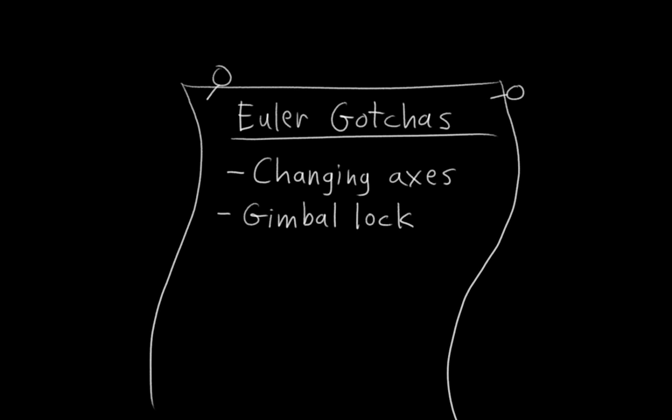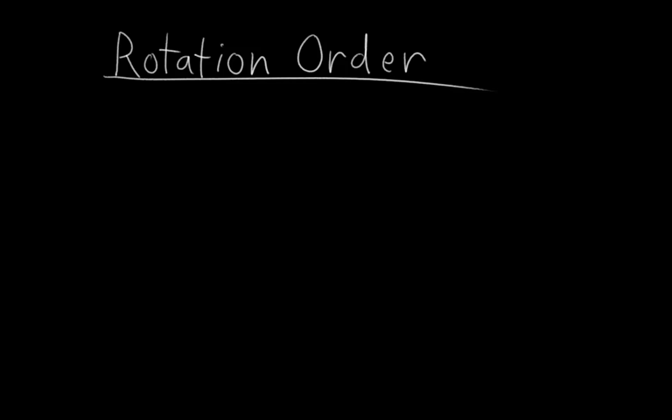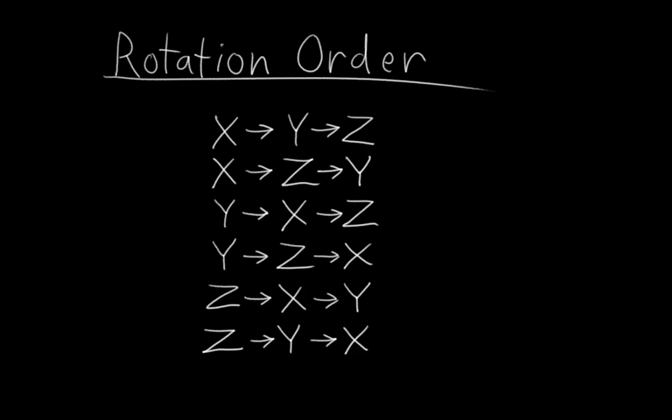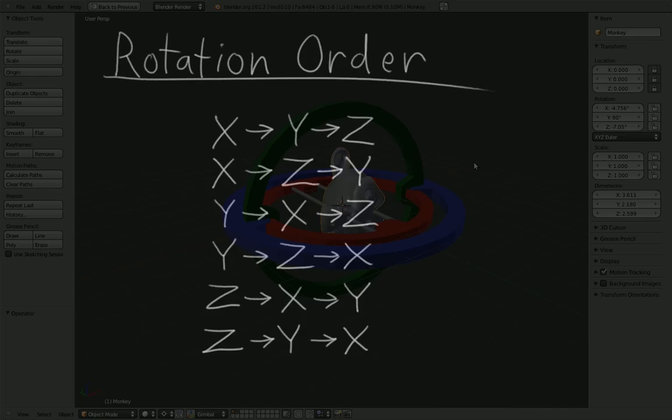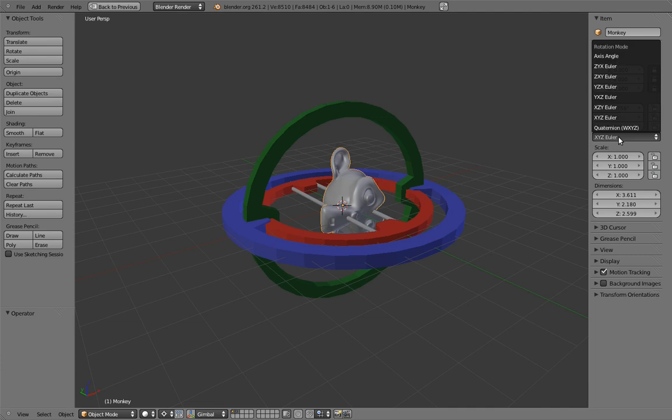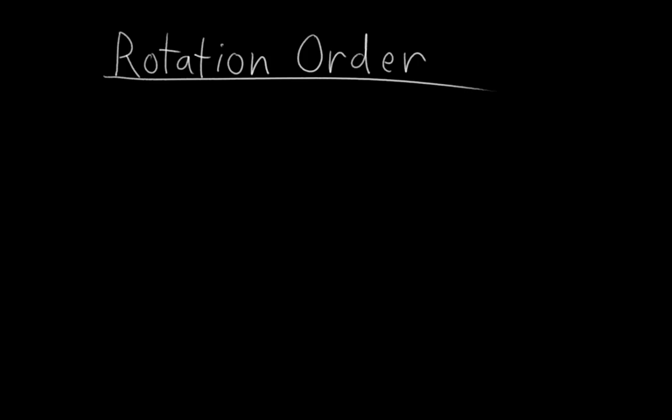Now there is one final thing you want to know about Euler rotations, and that's rotation order. You see, Euler rotations don't have to rotate on the x-axis first. You can choose any order you want to rotate around the axes. We could rotate on y, then x, then z, or z, then y, then x, or whatever. Blender has a simple way to choose this. In the rotation mode menu, you see a bunch of Euler options. The x's, y's, and z's next to each of those indicate the rotation order from left to right. So for example, zxy Euler means an Euler rotation that rotates on the z-axis first, then the x-axis, and finally on the y-axis.